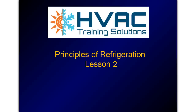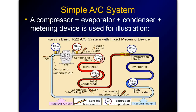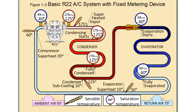Lesson two: principles of refrigeration. Let's get started. First we're going to take a look at a simple air conditioning system — R22 — with a compressor, evaporator, condenser, and a fixed orifice metering device. This illustration represents what we're going to be looking at throughout the different commercial refrigeration courses. Let's start to get familiar with it, and we have pressure gauges set throughout the system to show you pressure.